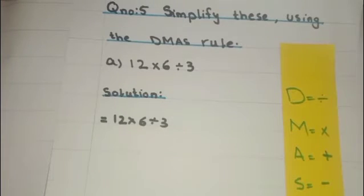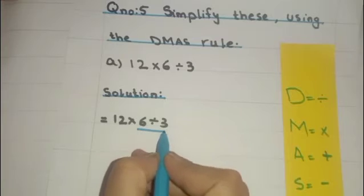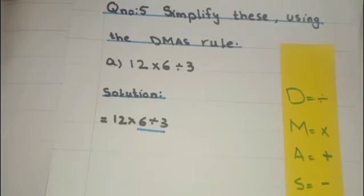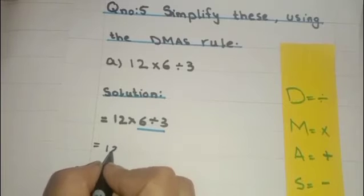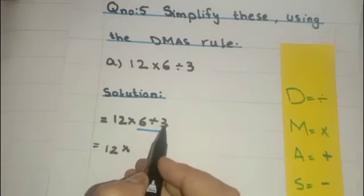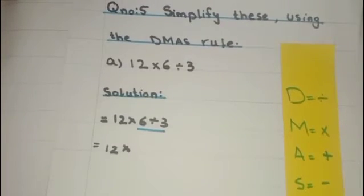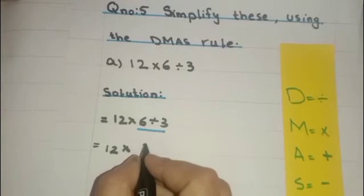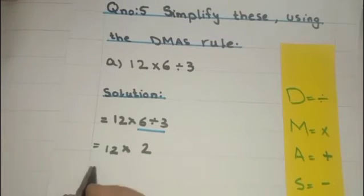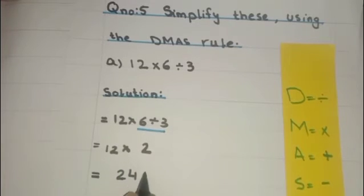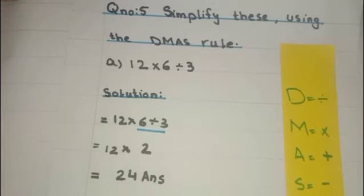So first of all we will divide. Write 12 as it is, multiply sign as it is, now 6 divided by 3. We will divide 6 by 3 by reading out its table: 3 twos are 6, so 2 is the answer of 6 divided by 3. Now we will do multiplication: 12 multiply by 2, 12 twos are 24. So students, 24 will be our answer.